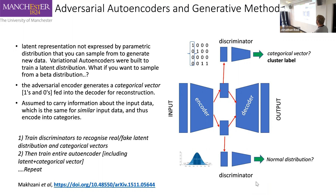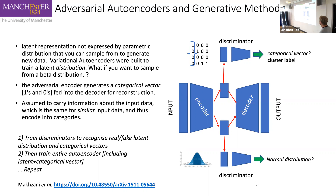That categorical vector is assumed to carry information about the input data, encoding categories. The second part is to train the discriminators to recognise real and fake latent distributions and categorical vectors. A generator provides fake data points to the discriminator alongside real data, and the discriminator's job is to discriminate between the real and fake. It's an iterative process — they train each other, heavily penalising the generator when it gets it wrong — and this cycle repeats until we reach a number of clusters that is optimal.